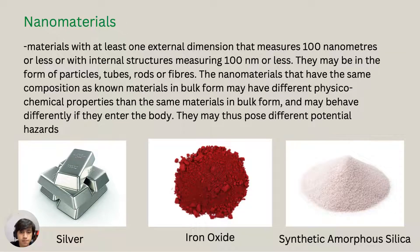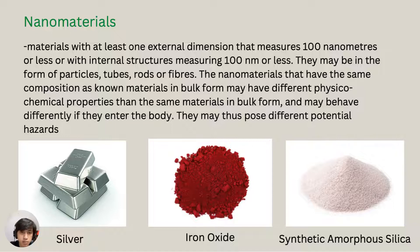Finally, nanomaterials are materials with at least one external dimension measuring 100 nanometers or less, or with an internal structure measuring 100 nanometers or less. They may be in the form of particles, tubes, rods, or fibers. These nanomaterials may have different physicochemical properties than the same materials in bulk form, and may behave differently if they enter the body. Examples include silver, iron oxide, and synthetic amorphous silica. That's all for this presentation — thank you.